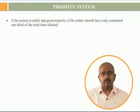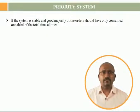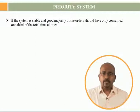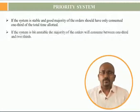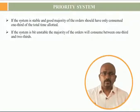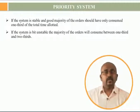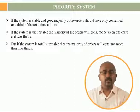If the system is stable and good, the majority of orders should have consumed only one-third of the total time allotted. If the system is a bit unstable, then the majority of orders will consume between one-third and two-thirds. But if the system is totally unstable, the majority of the orders will consume more than two-thirds.